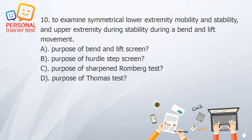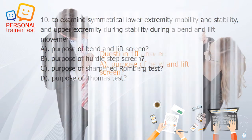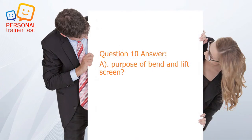Question 10. A. Purpose of bend and lift screen. B. Purpose of hurdle step screen. C. Purpose of Sharpened Romberg test. D. Purpose of Thomas test. Answer: A. To examine symmetrical lower extremity mobility and stability, and upper extremity stability during a bend and lift movement — purpose of bend and lift screen.